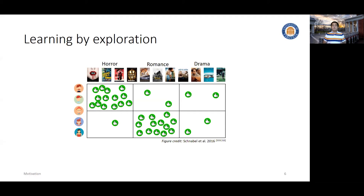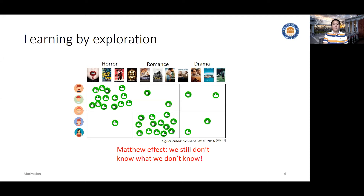Unfortunately, this will make the system a victim of the Matthew effect — the rich get richer — and the system simply amplifies the bias that already exists in the data, which can hardly optimize the utility of users. How do we address this? How do we get a better understanding of users' preferences so that we can maximize their satisfaction? The answer we provide is learning by exploration — we need to actively explore the unknown, so hopefully we can better understand the distribution and provide better recommendations.